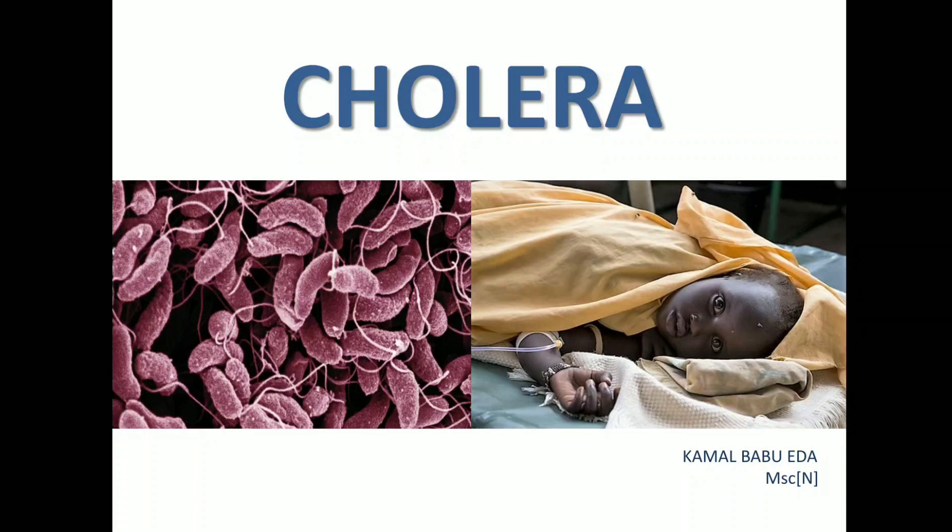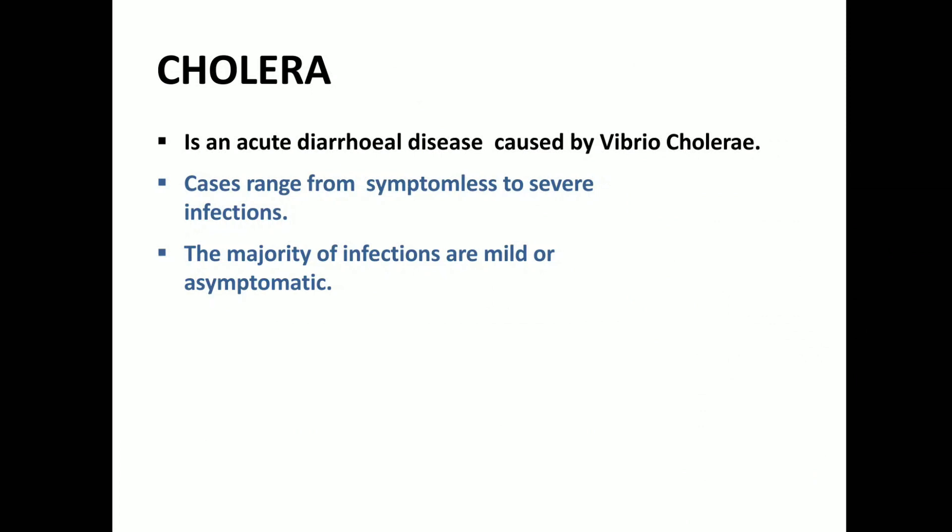Today our topic is on cholera. Cholera is an acute diarrheal disease, mainly caused by the organism called Vibrio cholerae. The cases are mainly ranging from asymptomatic to severe — the cases can be asymptomatic and can also be at a very severe stage.